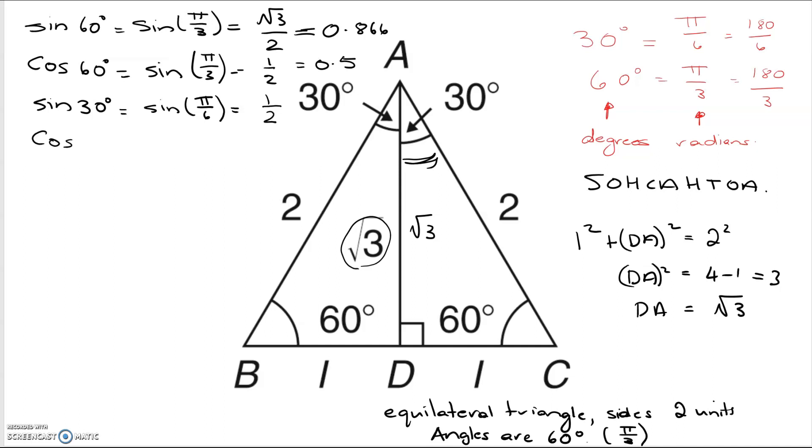And cos 30, cos 30 is going to be the adjacent over the hypotenuse, which is root 3 over 2.